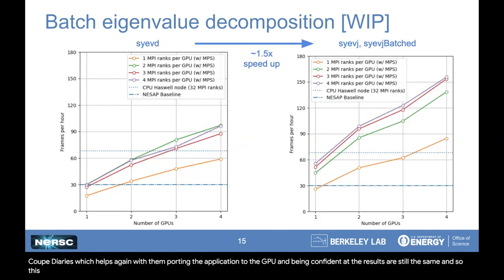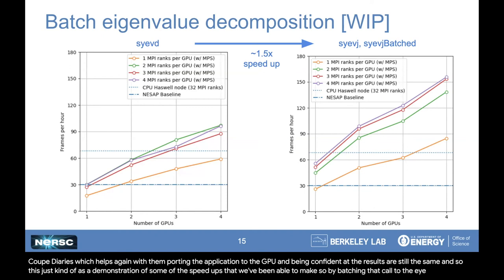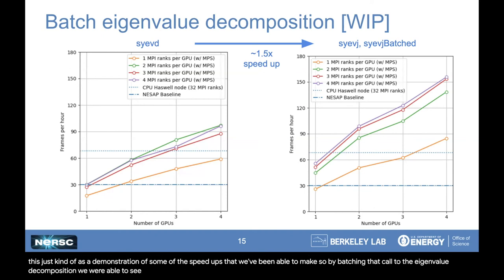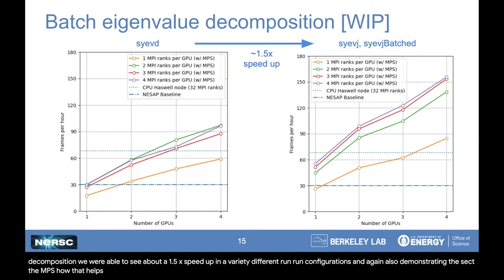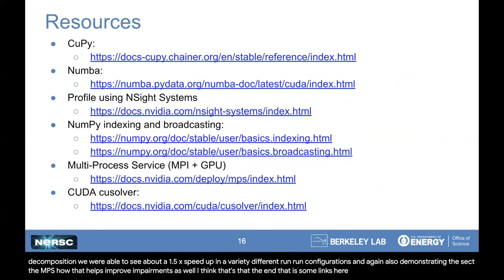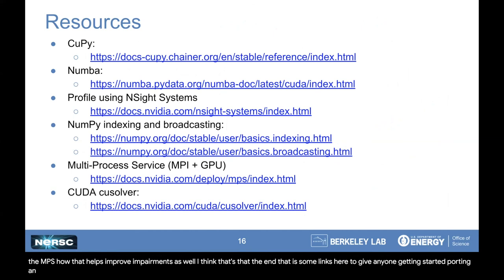By batching that call to the eigenvalue decomposition, we were able to see about a 1.5x speedup in a variety of different run configurations. This also demonstrates how MPS helps improve performance as well. That's the end — I've added some links to give anyone getting started porting an application some references and resources on where they can start out.